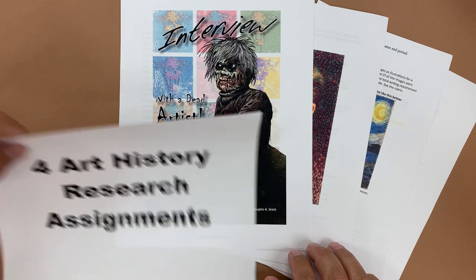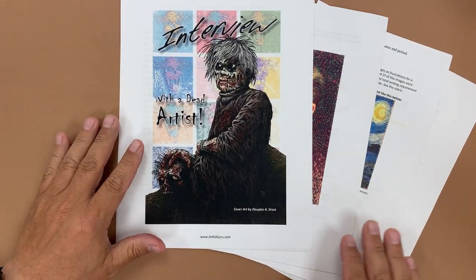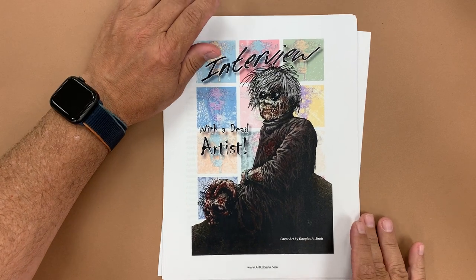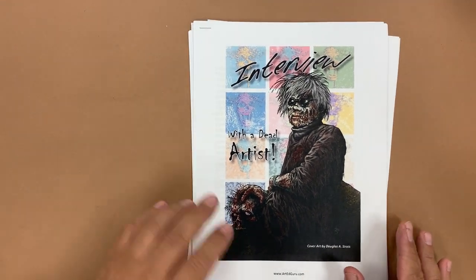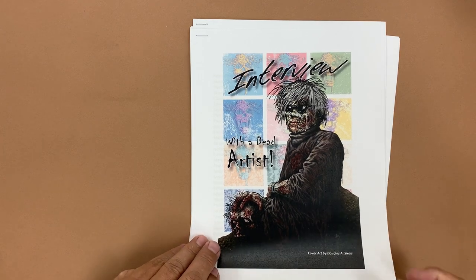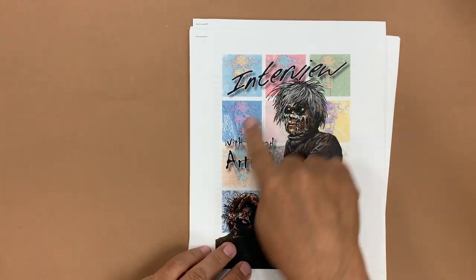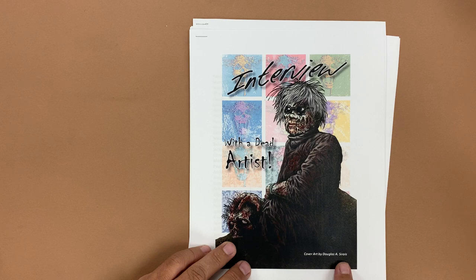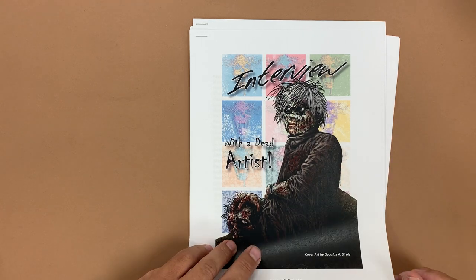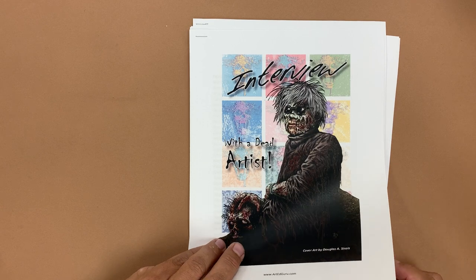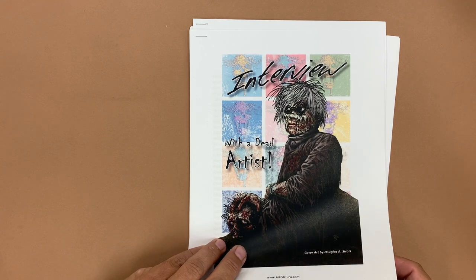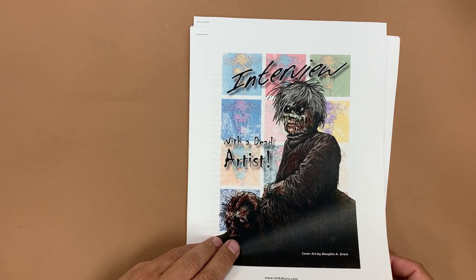These have been really good and have helped cut down on plagiarism, which can sometimes be an issue when we're doing research assignments. I've got 'Interview with a Dead Artist,' which was inspired by an image by Douglas Sirios — he's got Andy Warhol here as a zombie — and I thought it would be interesting to have students write their research papers in the first person, and it really has cut down on plagiarism quite a bit.